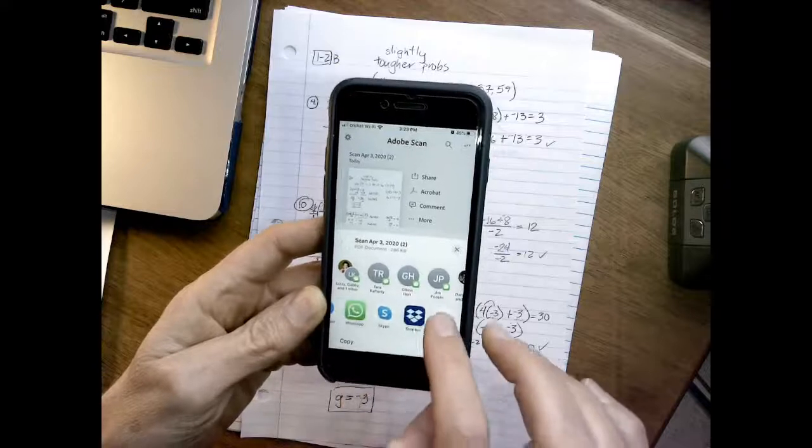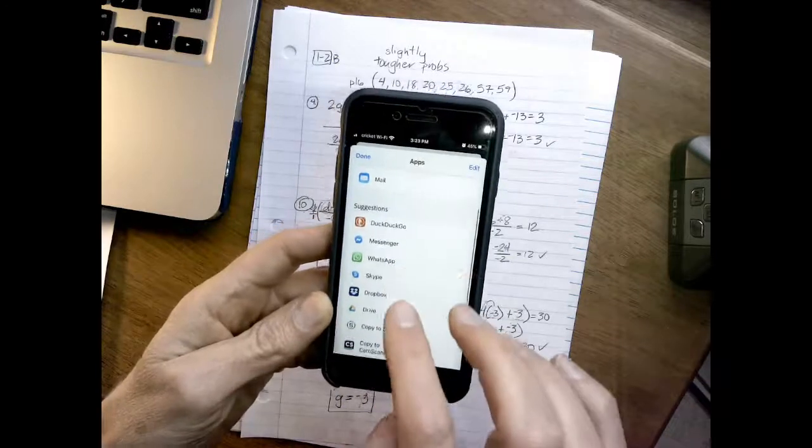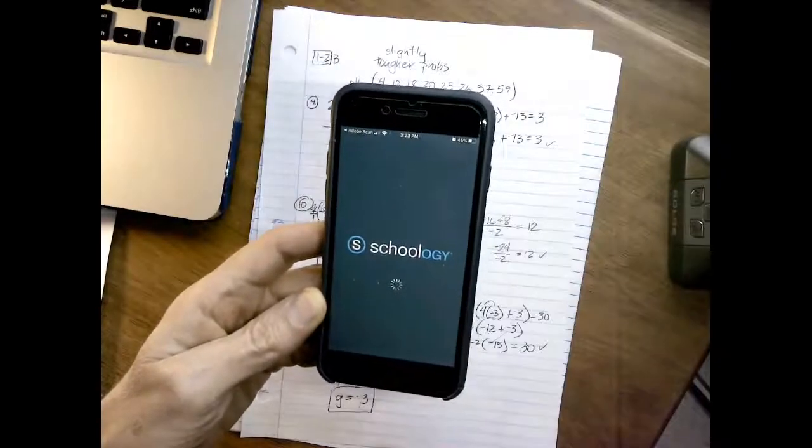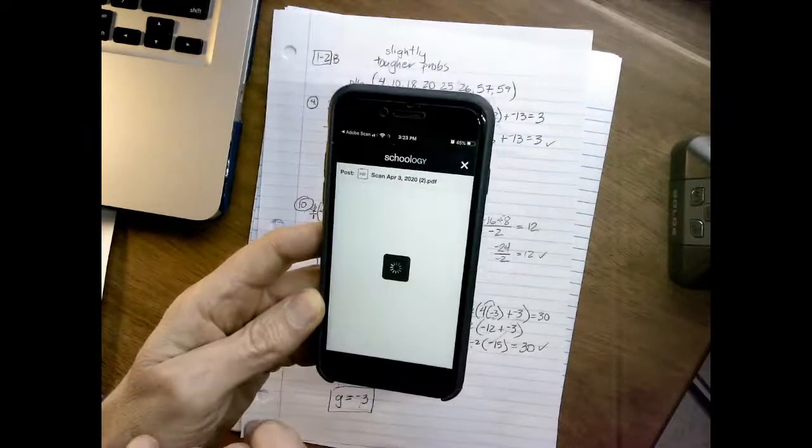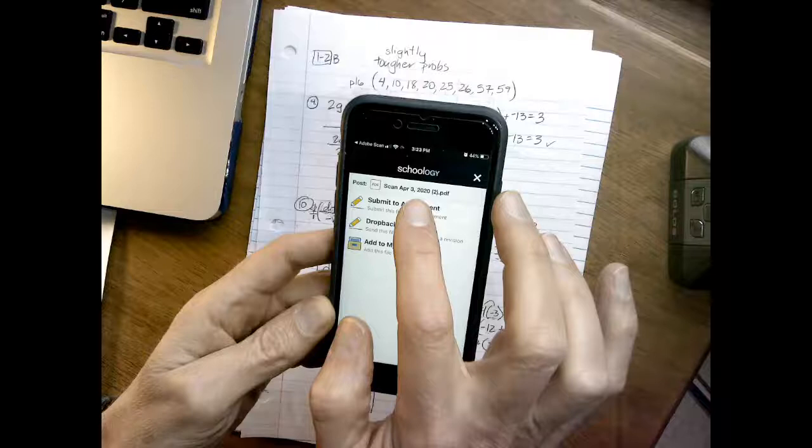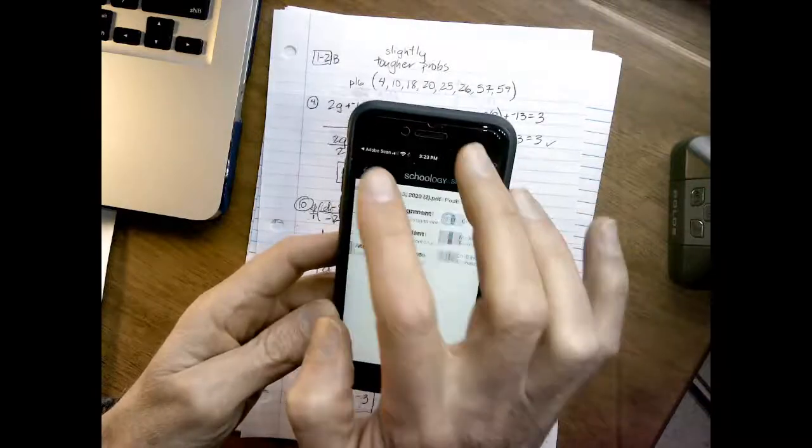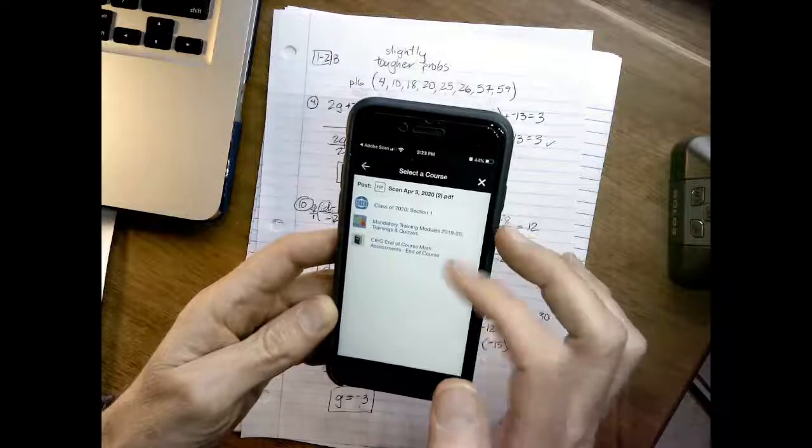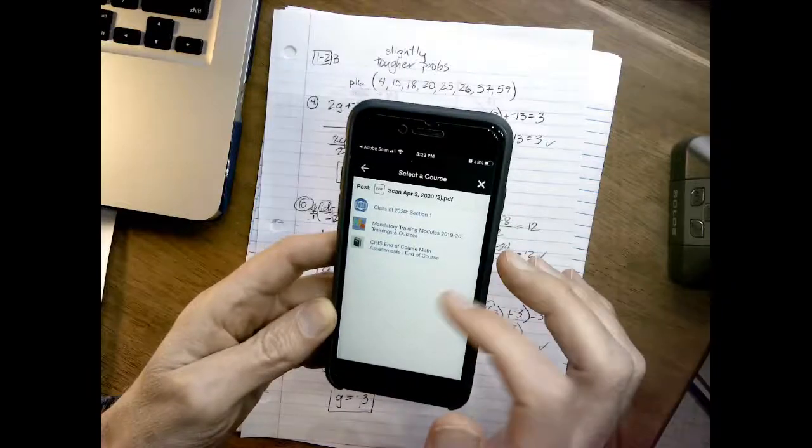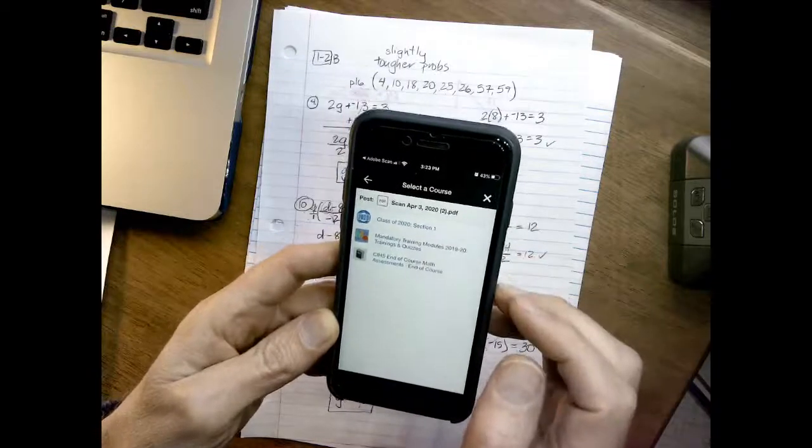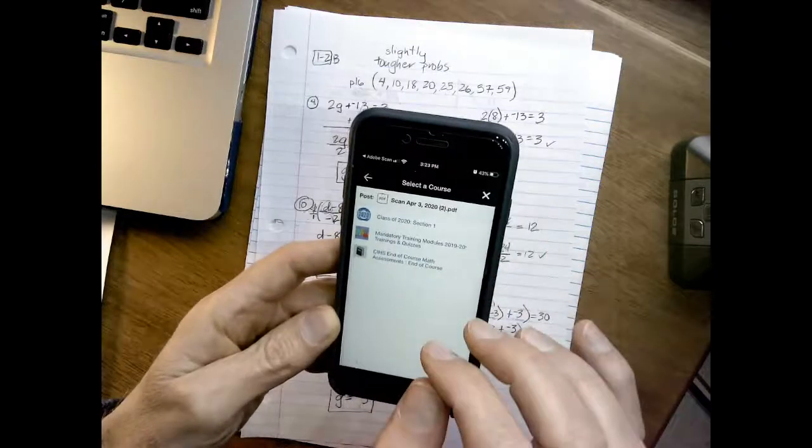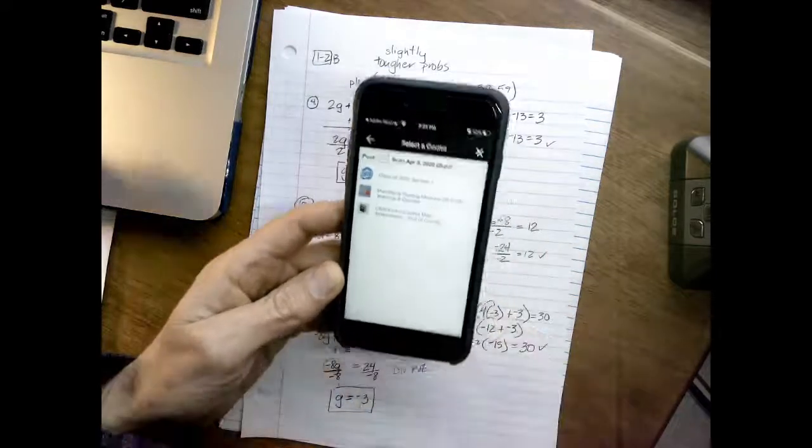But if I hit more it does eventually find Schoology. I now then choose assignments, grab the right course. I unfortunately am not signed up for my math courses apparently so I cannot submit to my geometry homework or my algebra homework, but you would do that and then just hit boom once you get to the right assignment. Hope that helps you.